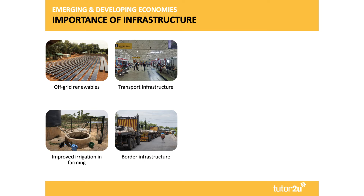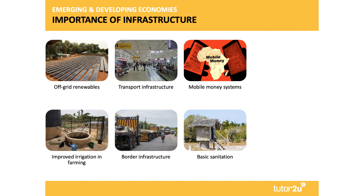You also need infrastructure to connect countries and to have appropriate border infrastructure to help speed the process of goods and services. We need financial infrastructure. There's a lot of interest at the moment in the rise to prominence of mobile money systems, including the M-PESA system, which originated in Kenya and which is now used in many countries. Basic irrigation and basic sanitation are absolutely crucial from a public goods perspective.